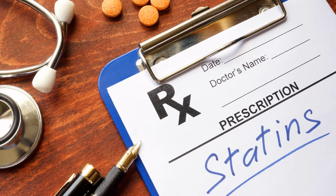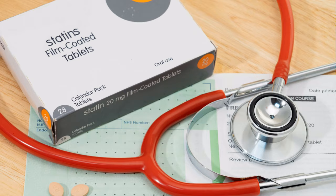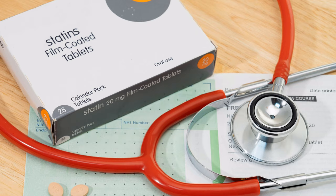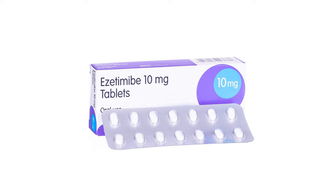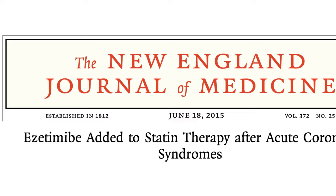Statins are the first-line therapy because of their efficacy in preventing cardiovascular events and improving survival. High-intensity statins — rosuvastatin and atorvastatin — are indicated in patients with diabetes at high or very high cardiovascular risk. Their beneficial effects outweigh the potential increased risk of incident diabetes, especially in older patients or those already at risk for developing diabetes. Adding ezetimibe to statin therapy is recommended in patients with diabetes and recent acute coronary syndrome who are not at the target of less than 1.4 mmol/L with a statin alone.